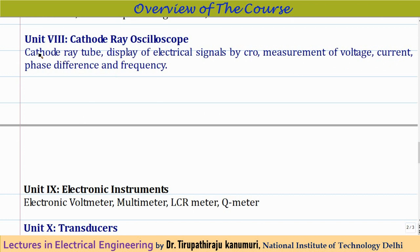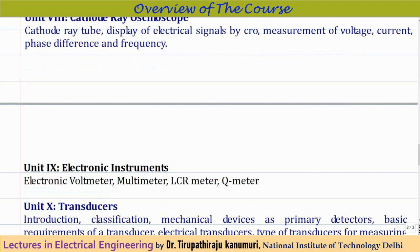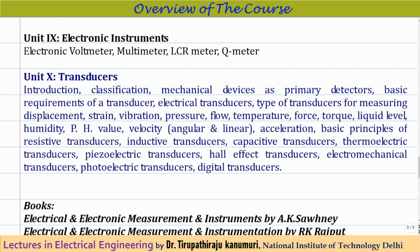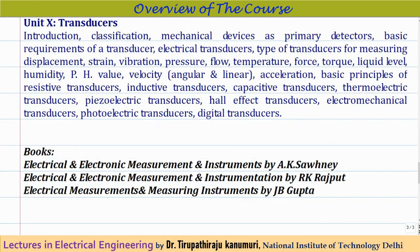Module 8 is the cathode ray oscilloscope, also called the CRO. We will first look at the cathode ray tube and how electrical signals are displayed on the CRO. Using those signals, we will learn how to measure voltage, current, phase difference, and frequency with the cathode ray oscilloscope.